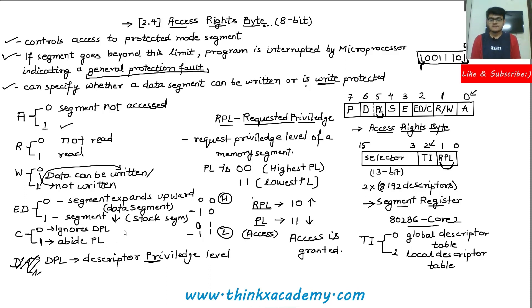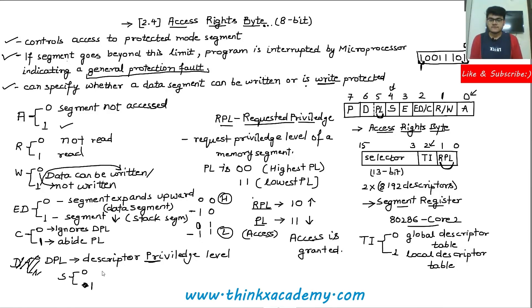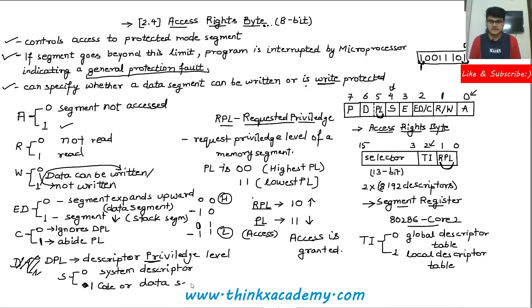The remaining bit is S, which is the fourth bit. S can be zero or one. If S is zero, that means we are using the system descriptor. If S is equal to one, then we are going to use the code or data segment descriptor.